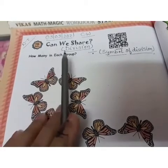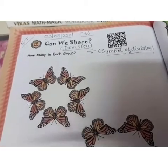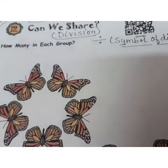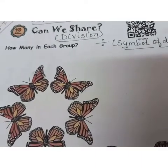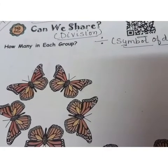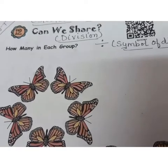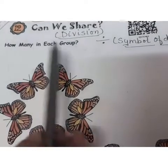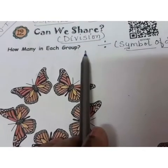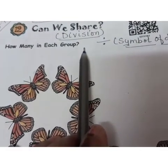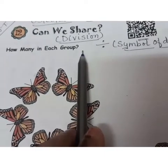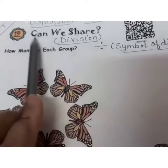First of all, you should know what 'Can We Share' means — that means how can we divide things equally. हम कोई भी चीज़ को जब डिवाइड करते हैं तो हम उसको कैसे डिवाइड करते हैं — that is 'can we share.' In other words, it is nothing but division. Just like we learnt addition, subtraction, multiplication — the next very important thing in maths is division.